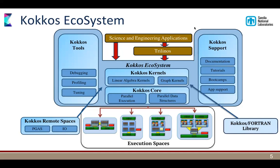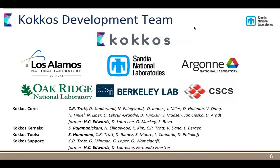New things coming in include remote spaces, which will give you something equivalent to global arrays, as well as potentially IO via Kokkos views. From the Los Alamos side, we have the Kokkos Fortran interoperability library. The Kokkos development team has been growing significantly, with core developers now at five national labs: Los Alamos, Sandia, Argonne, Oak Ridge, and Berkeley, plus contributors at the Swiss supercomputing center. There are about 16-17 people contributing to the core library, another 6-7 to kernels, and more to tools and support.